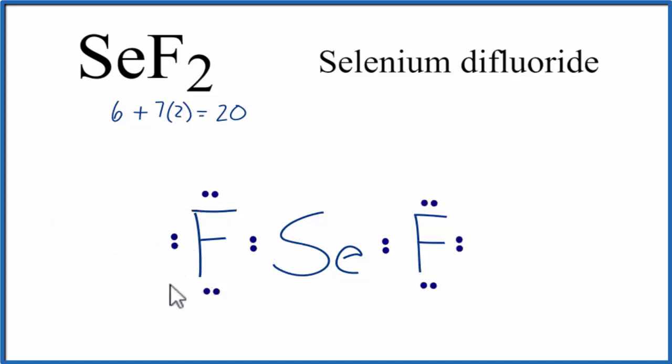So far we've used 16 valence electrons, we have a total of 20, so we can put 4 electrons on the selenium here and complete its octet. And now we've used all 20 valence electrons, each of the atoms has 8 valence electrons, an octet, so we're done.